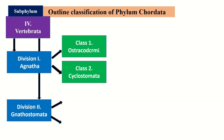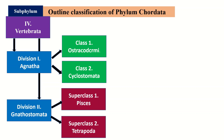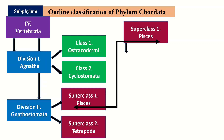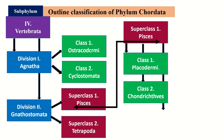Gnathostomata has two superclasses: superclass Pisces and superclass Tetrapoda. Superclass Pisces is divisible into three classes: Placodermi, Chondrichthyes, and Osteichthyes.